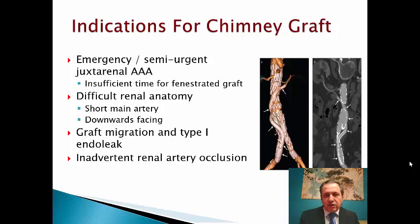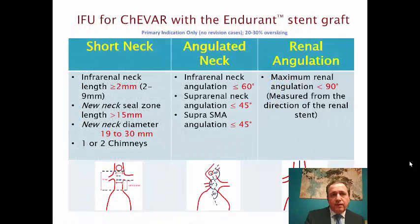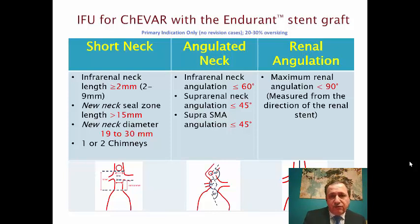Chimney is also indicated if you cover the renal artery by mistake during EVAR deployment. For the chimney IFU, the most important point is the neck — you need at least 2 mm of neck; you cannot do it with no neck at all. The new sealing zone should be at least 15 mm. The infrarenal angulation should be less than 60 degrees, suprarenal neck angulation less than 45, supra-celiac angulation less than 45, and maximum renal angulation less than 90 degrees.